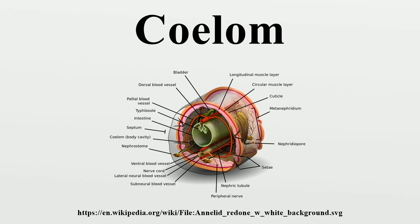A coelom can absorb shock or provide a hydrostatic skeleton. It can also support an immune system in the form of coelomic cells that may either be attached to the wall of the coelom or float about freely. The coelom allows muscles to grow independently of the body wall, a feature seen in the digestive tract of tardigrades, which is suspended within the body in the mesentery derived from a mesoderm-lined coelom.